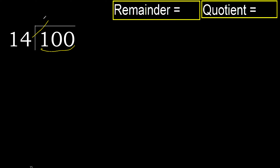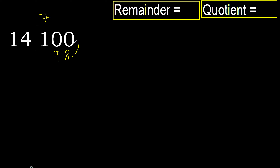14 multiplied by which number is nearest to 100 but not greater? 14 multiply by 8 is greater. Multiply by 7 — 98 is not greater.